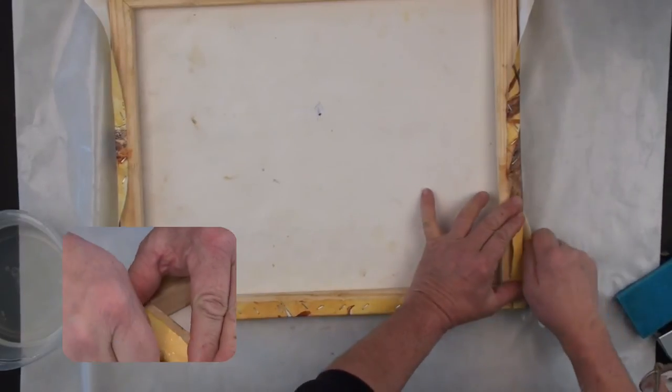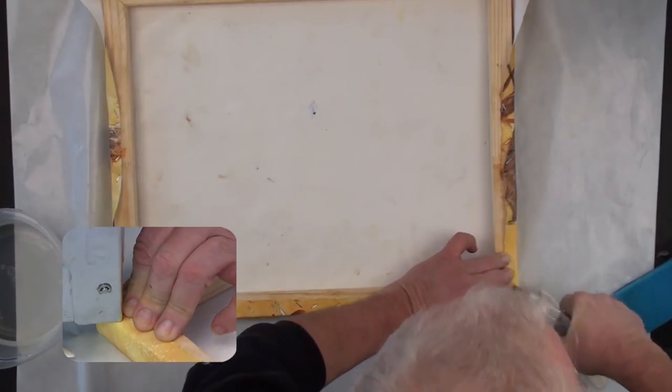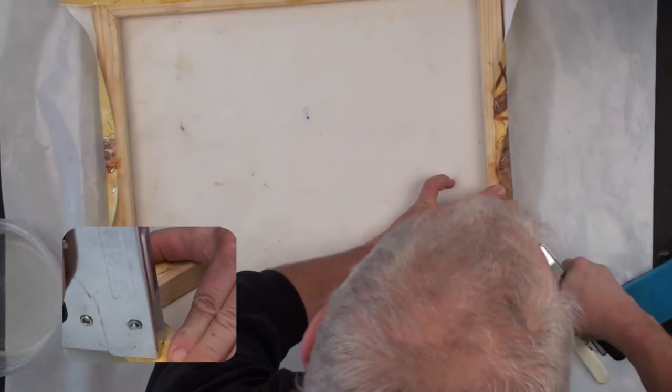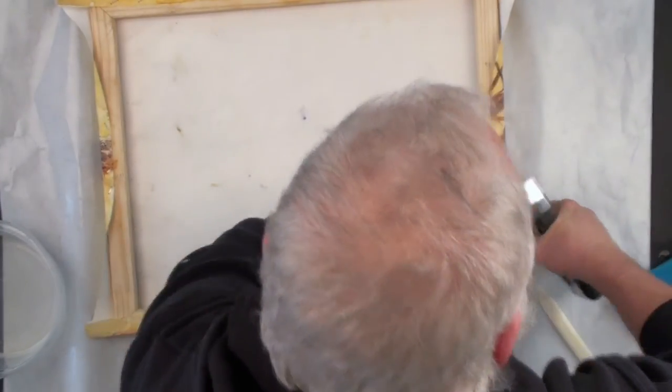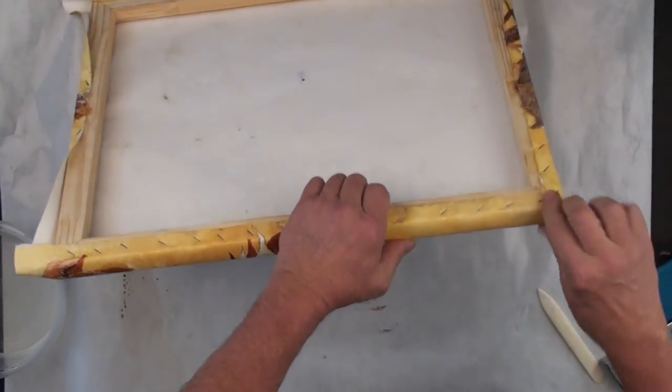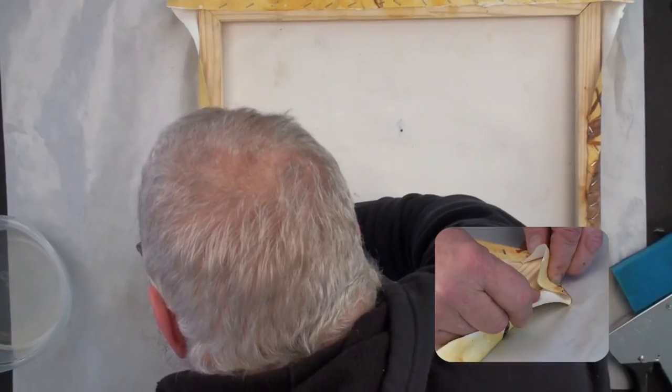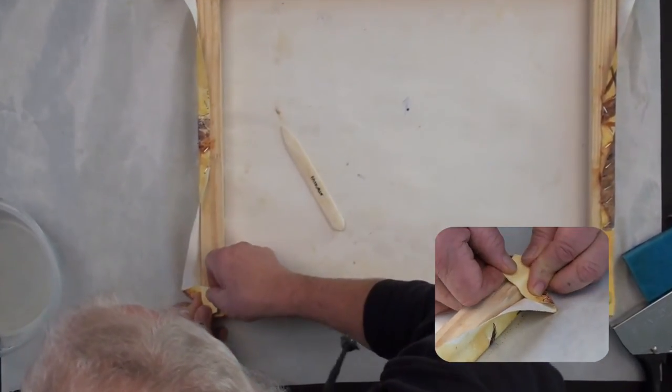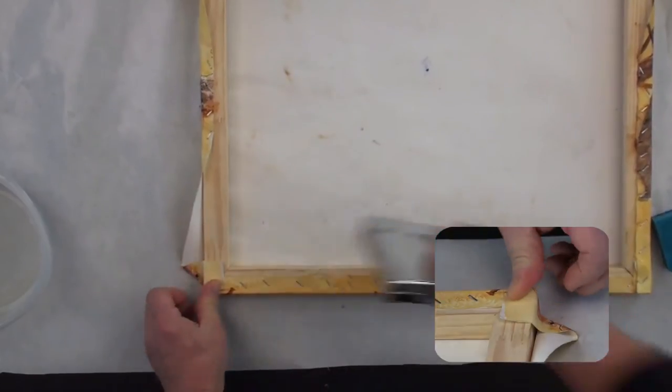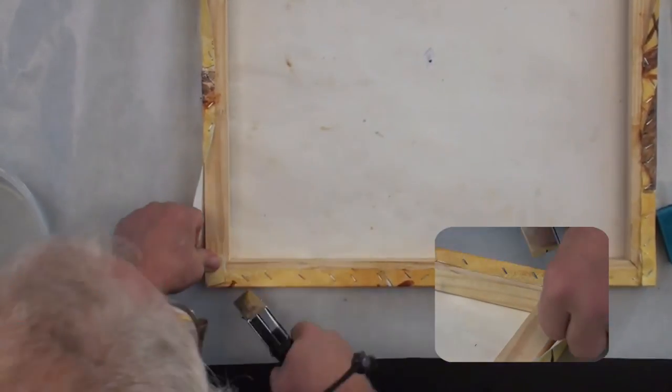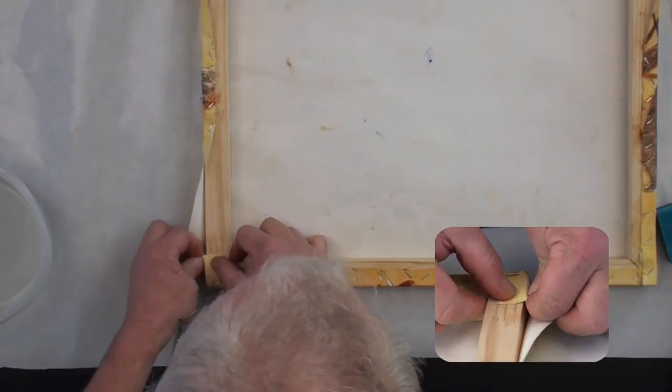Pull that up and do the same thing we did on the other side. There you go. One down, three to go. Putting a little crease in at the 45, flattening the bottom edge around, curving it down like that. That one down, tacking it like that. That's just to hold it still. Don't tack it up here because you won't be able to do this.